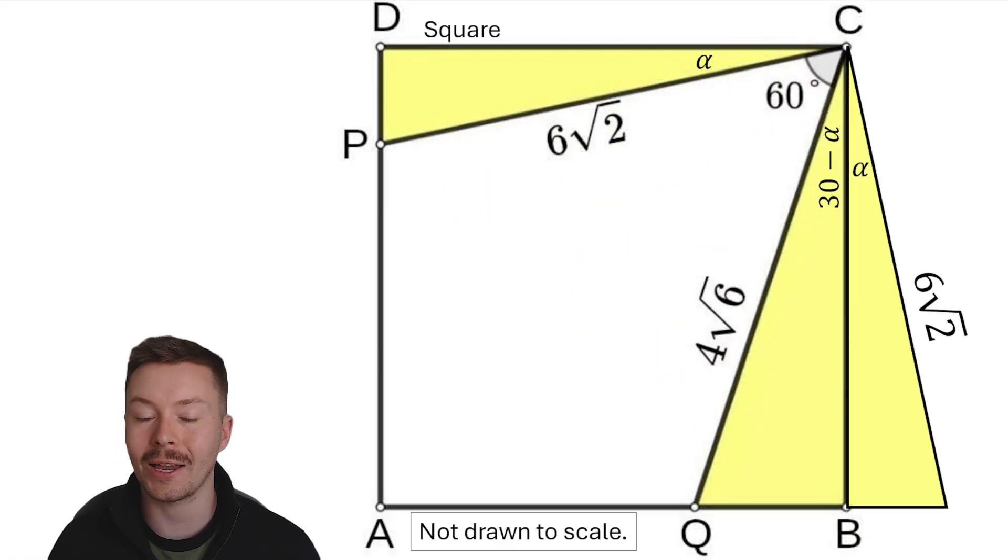We know that that length on the right-hand side is 6 root 2 because that's the same length here. And then we've got the angles of 30 minus alpha and alpha, which when put together give you a total angle of 30 degrees.